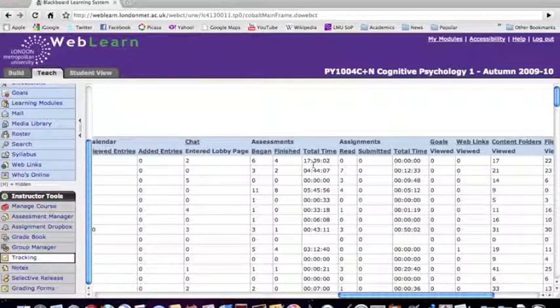But supposing I want to know a little bit more still about individual students. What I need to do here is to scroll back across to the left and then click on the name of the student that I'm interested in. I'm not going to show the names on the screen here but I will take you to the next screen that you see if you do click on the name of a student.